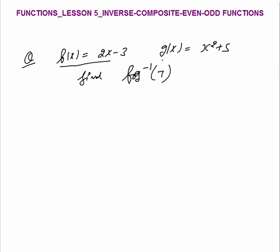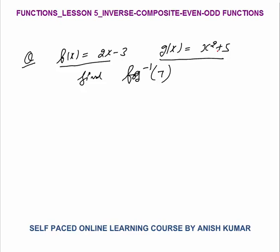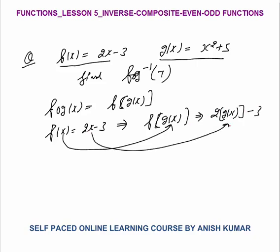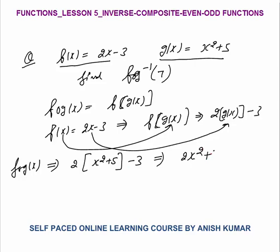Now the next question says f(x) = 2x minus 3 and g(x) = x² plus 5. First I will find f∘g(x), which is the function f on g(x). I know f(x) = 2x minus 3. To calculate f(g(x)), I replace x with g(x), giving 2·g(x) minus 3. Since g(x) = x² + 5, this is 2(x² + 5) minus 3, which equals 2x² + 10 minus 3, so f∘g(x) = 2x² + 7.